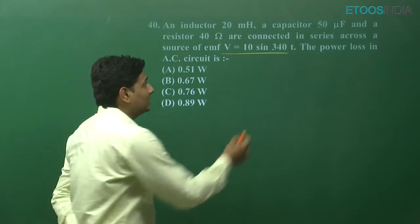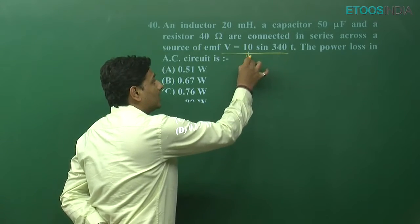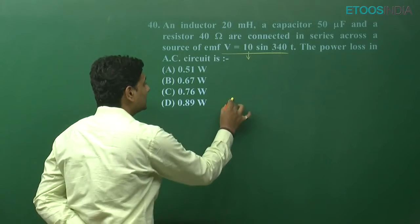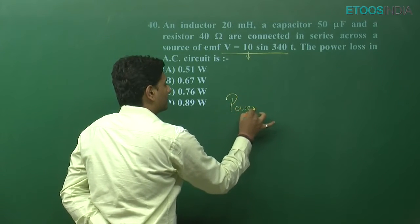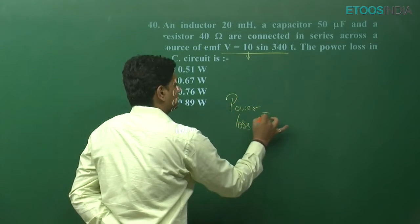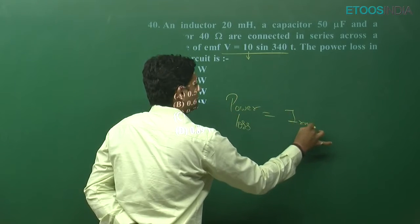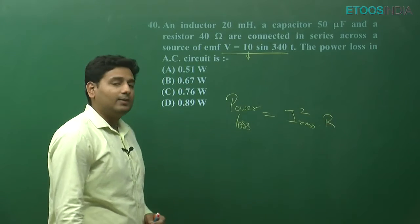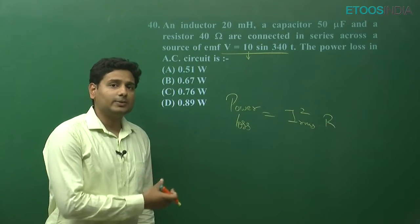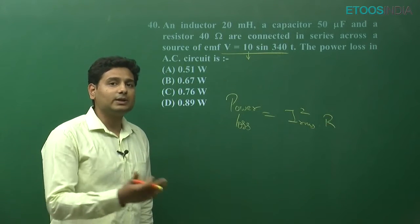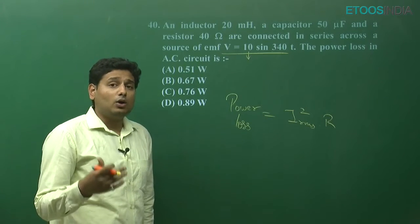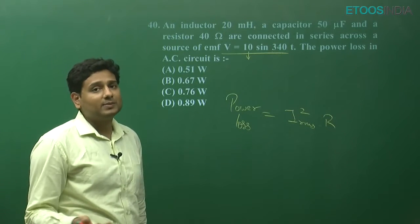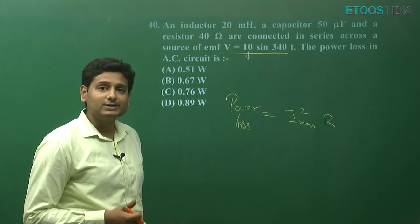Here we can see omega is 340, this will be our voltage. The power loss in an AC circuit — how can we get the power loss? It is IRMS squared into R. This is the formula for power loss. Now here is one thing to understand: if we get the power loss, then obviously we know our impedance and our current amplitude. If we know these two things, we can approach this question.